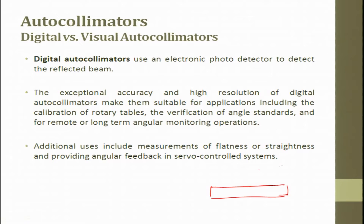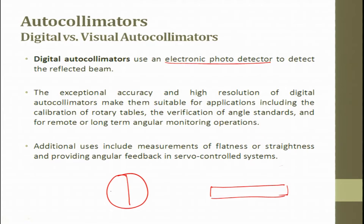The autocollimator can be analogous — meaning visual-based — or it can also be digital. In a digital autocollimator, we use an electronic photodiode. The photodiode has four quadrants, or there are interference fringe patterns which can be counted. From those fringe patterns you can try to find out the displacement.